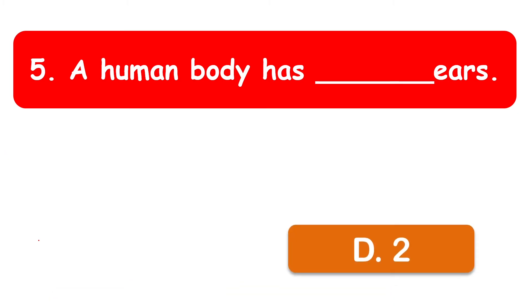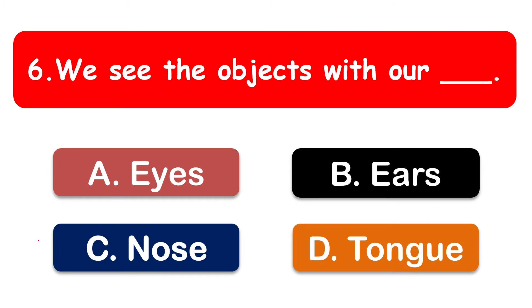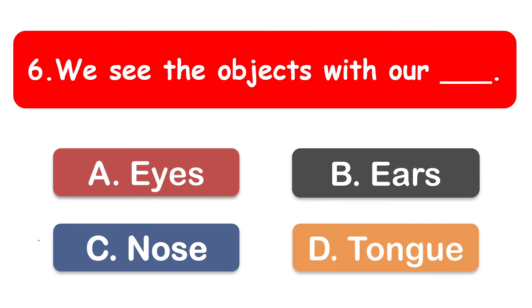We see objects with our dash. The options are eyes, ears, nose, and tongue. The correct option is eyes — we see objects with our eyes.